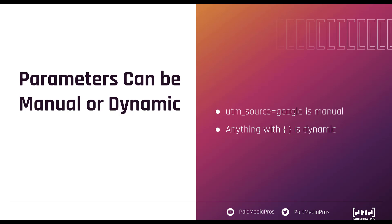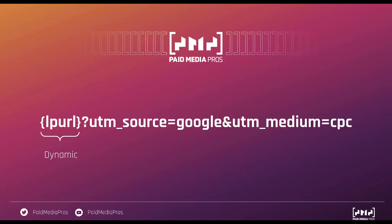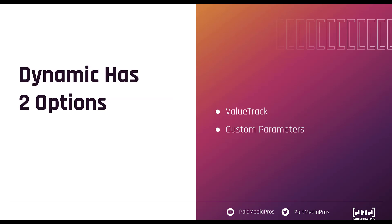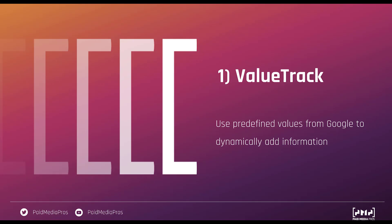Parameters can either be manual or dynamic — anything with curly braces is going to be dynamic. UTM source is manual because it's just written in and won't change. Everything will always populate exactly the same way you have it in the tracking template. Parameters like source and medium are pretty simple in a Google Ads account because I'm always going to use Google as the source and CPC as the medium. But depending on your naming convention, those might need to change, so you can utilize some dynamic tracking, which has a couple of different options: value track or custom parameters — both designated with curly braces.